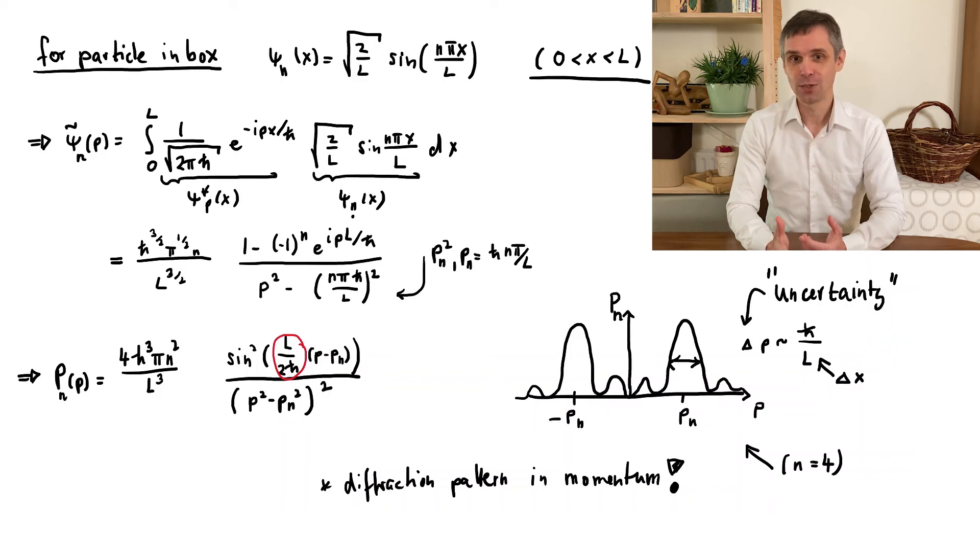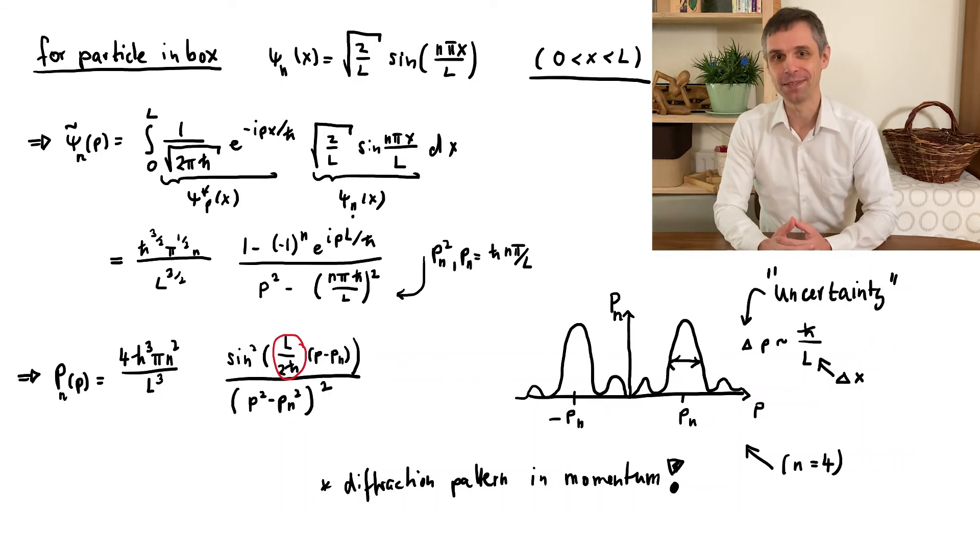Even more fundamentally, knowing the position wave function ψ(x) was all we needed to work out the momentum wave function ψ̃(p), so these quantities are strictly related. We will later quantify this exactly in terms of Heisenberg's uncertainty principle.